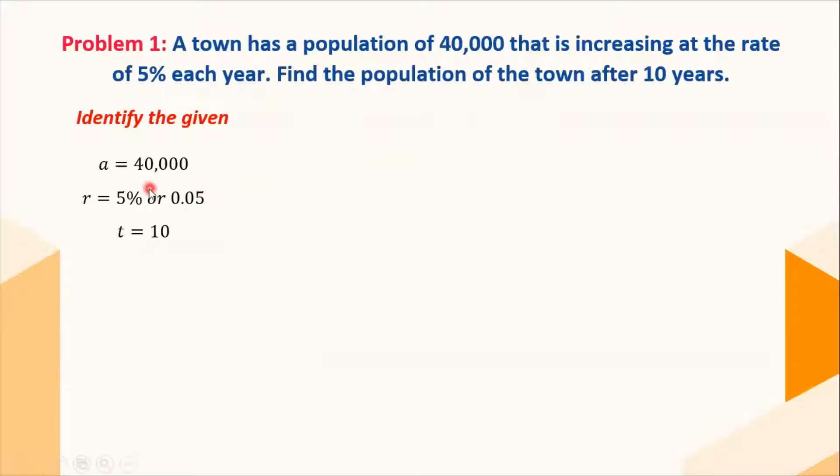We have here a, which is our initial value or the population before measuring the growth, which is 40,000. r here is the growth rate, most often represented as a percentage or expressed as a decimal, so for 5%, that is 0.05. For t, that is 10, which is the number of time intervals that have passed or that corresponds to years.